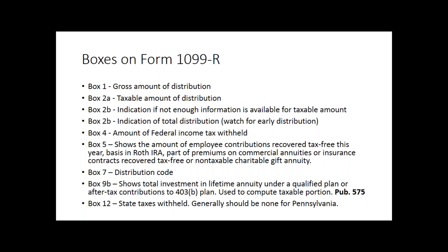Typically, box 4 will show if there's any federal income tax withheld. We want to make sure we include that in all 1099-Rs, ensuring it's in the tax layer system itself. Some people decide they prefer to have withholding taken out of their retirement account rather than making estimated payments. It doesn't happen often, particularly with clients in the VITA system, but every once in a while people will have money withheld from their retirement distribution. So we don't want to overlook that amount.